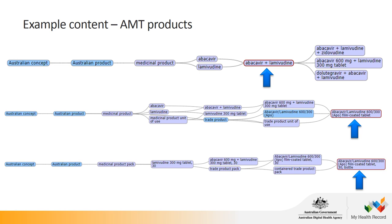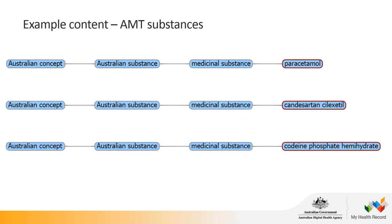Here are a few examples taken from the Shrimp terminology browser. In the first line, we're looking at a medicinal product concept in the Australian product hierarchy — the example highlighted in red is abacavir plus lamivudine, showing links to all the different related concepts. On the second line, medicinal products link all the way down to a trade product unit of use, and on the bottom line, Australian product eventually links all the way down to a container trade product pack.